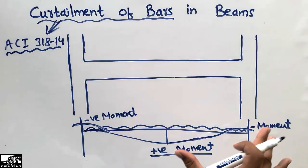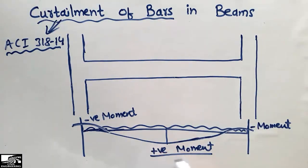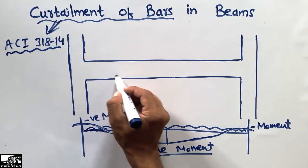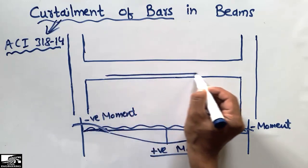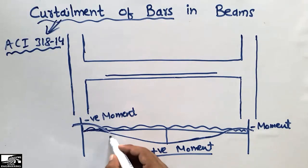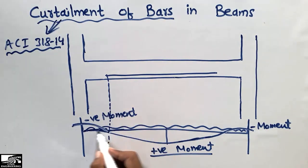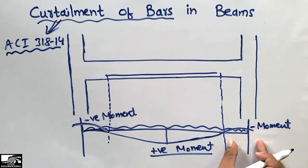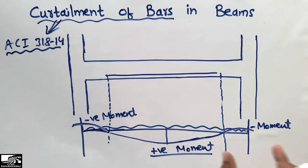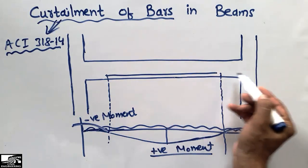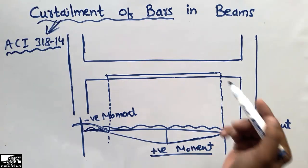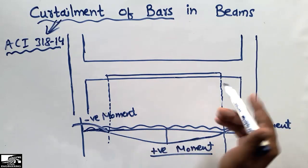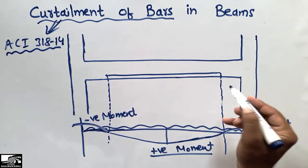According to this moment diagram, we place reinforcement in our beam. For the positive moment occurring at the mid of the beam, we place tensile reinforcement inside the beam. At the portions near the supports, there is no positive moment, so there is no need to place bottom reinforcement there. It is sufficient to place reinforcement only in the middle portion to resist the positive bending moment — that is why we curtail the bars up to a certain limit.